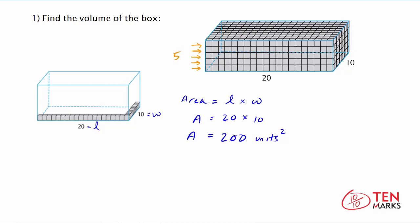So if we count all these up, you'll find that there are five layers identical to the base layer that we just looked at. If you wanted to find how many unit cubes fit inside this entire box, you'd be finding the volume. And to do that, you would need to add the number of unit cubes in each of these five layers.